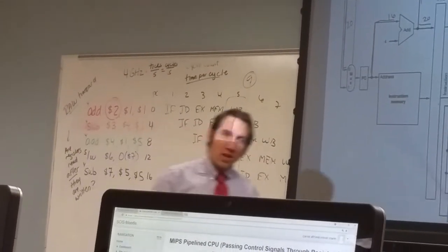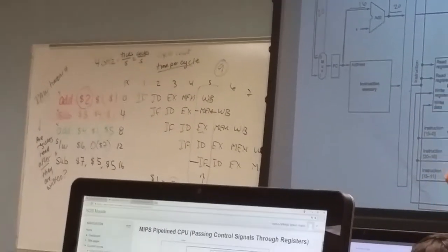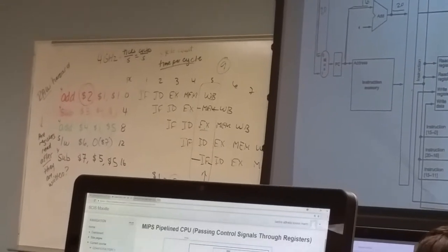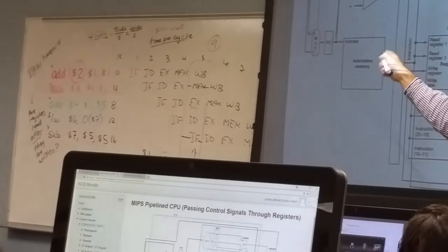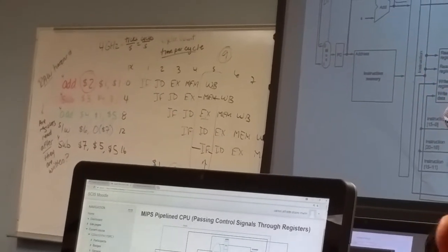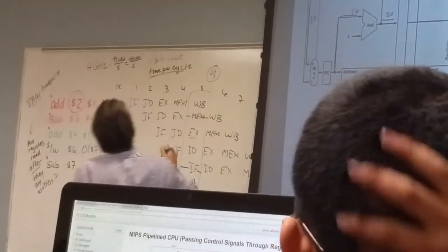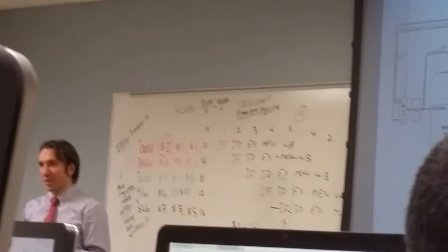So, is a four gigahertz processor always faster than a three gigahertz processor? Not necessarily, right? Because the time per cycle is not the only thing that matters. You also want to look at the cycle count.